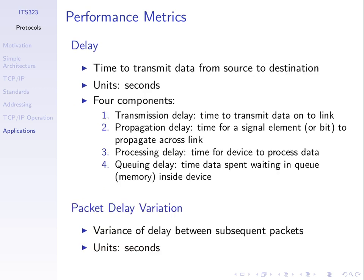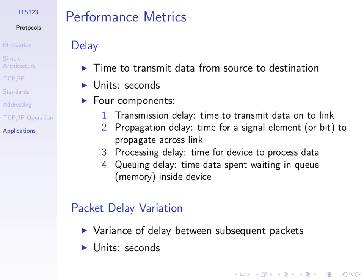We have one more metric to finish this topic: delay. We won't cover packet delay variation in this course, just delay — the time it takes to get a message from one point to another. So: how long does it take to get a packet from a source computer to a destination computer? That's what delay measures, in units of seconds. Across a link or network, there are four components that contribute to delay: transmission, propagation, processing, and queuing.